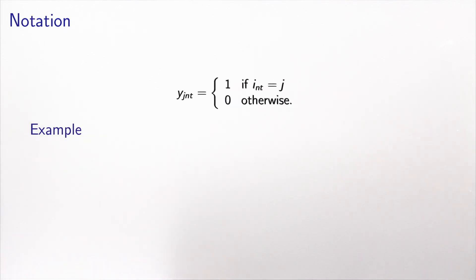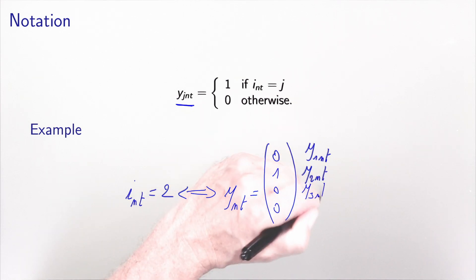I will denote by y_{i,n,t} a binary variable which is equal to 1 if the alternative chosen by individual n at time t is equal to i, and 0 otherwise. Suppose that individual n selects alternative 2 at time t. This would be equivalent to defining y_{n,t} as a vector with as many entries as alternatives, all 0 except for entry 2, which is 1. This is the notation that we will use.